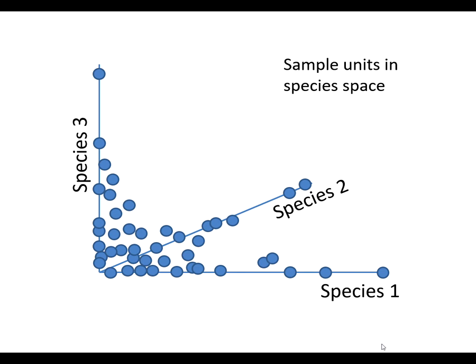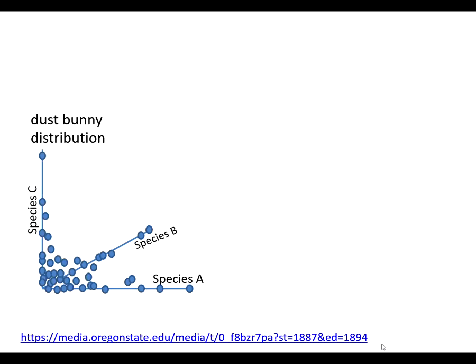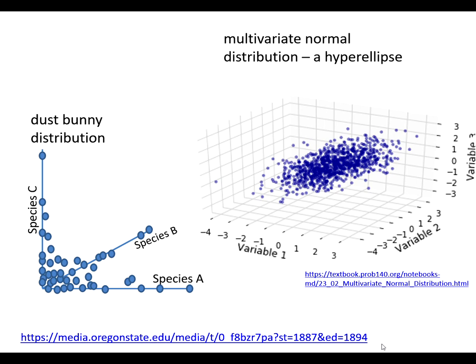The sample is a collection of those points and it looks like this. We use these data to answer questions about how communities differ from each other and why. A community sample in species space is very different from the sample distribution expected by traditional parametric statistical models, the multivariate normal distribution. The points occupy an ellipsoid diminishing in density toward the edges.